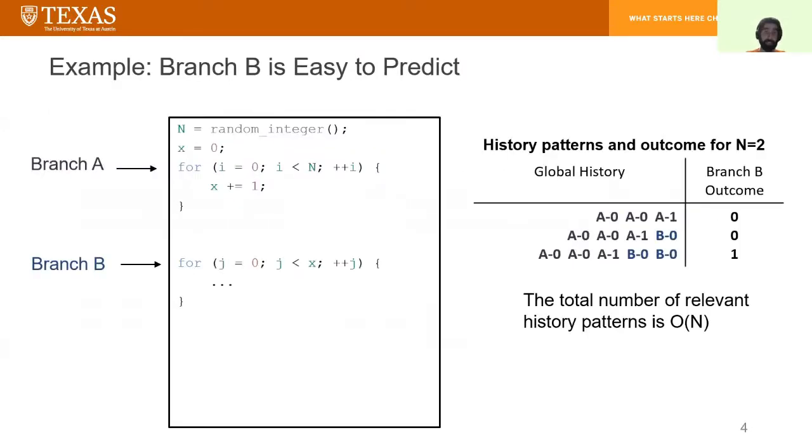Let's dig deeper using an example. In this program, we have two loops. The first loop iterates for a random number of iterations, and in each iteration it increments variable x. The second loop iterates as many times as x. In this example, we are interested in predicting Branch B, which is the exit branch of the second loop.